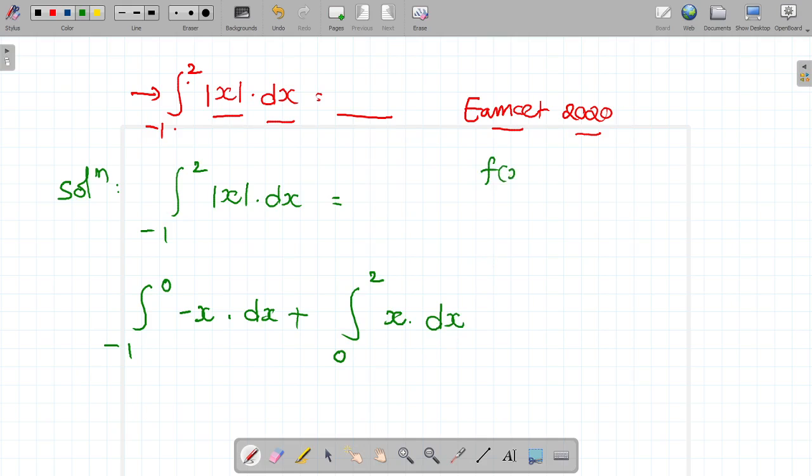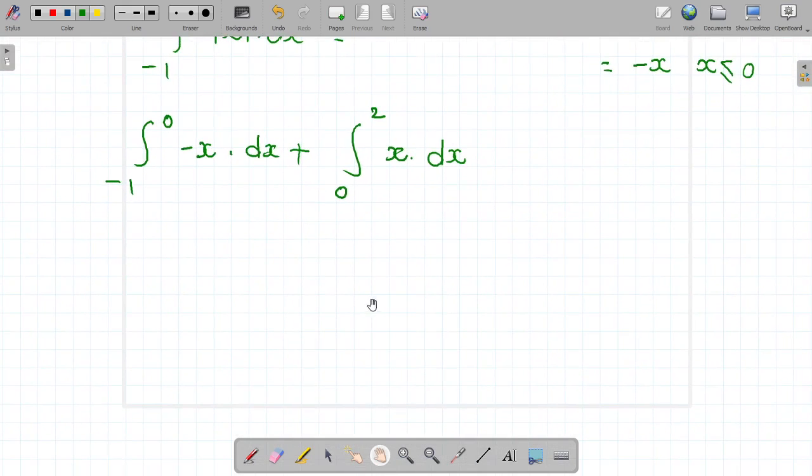Generally, f of x equals modulus x. From definition, it equals x when x is greater than or equal to 0. Modulus x equals minus x when x is less than or equal to 0. From that, I can write like this from the definition.